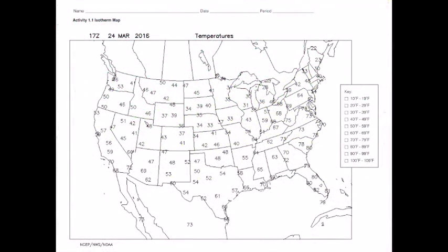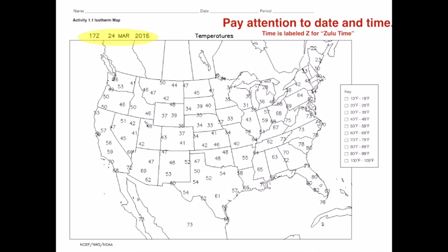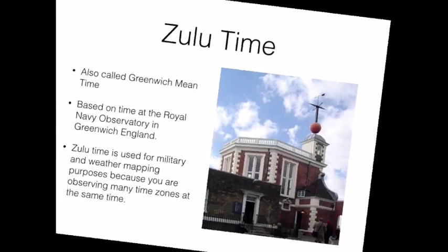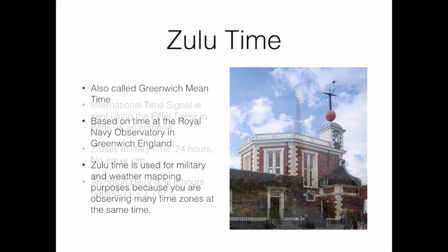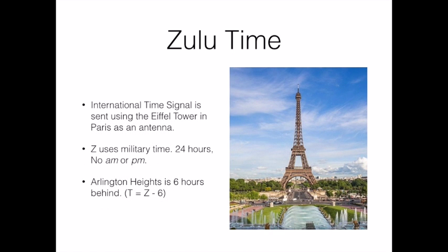We'll begin with a blank map of the US showing temperatures from all the reporting weather stations around the country. The time and date are stamped in the upper left hand corner using a system called Zulu time. Because our map covers many time zones it's important to use a system like this to avoid being confused about the time the data was collected.